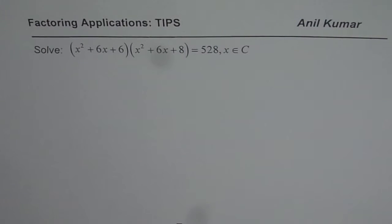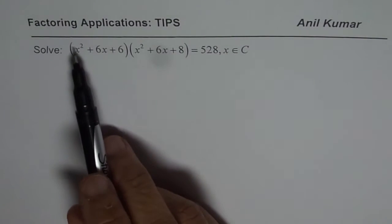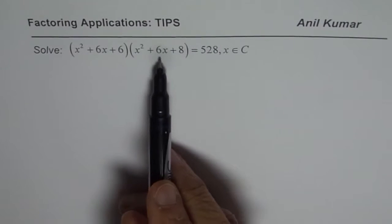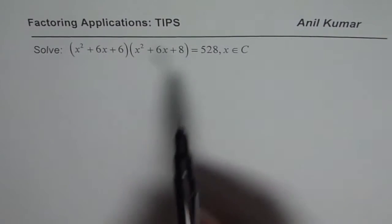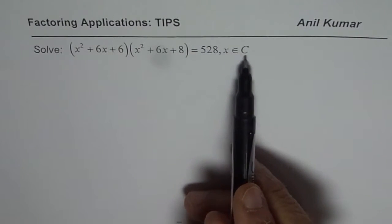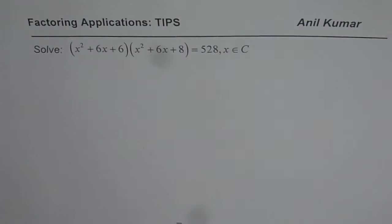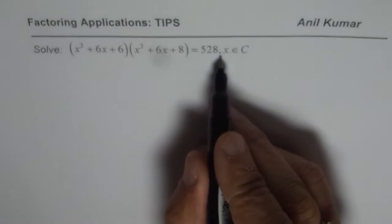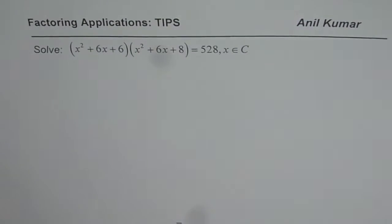I am Anil Kumar. Here is another thinking question on solving equations. The equation to solve is x squared plus 6x plus 6, times x squared plus 6x plus 8, equals 528, where x belongs to complex numbers. Those who have not done complex numbers can also solve it for x belonging to real numbers.